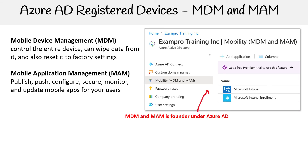Under your Azure AD, there's a section called Mobility, which covers MDM and also MAM. Here we can actually add different applications to apply MDM and MAM.